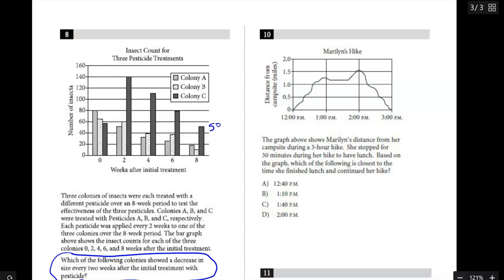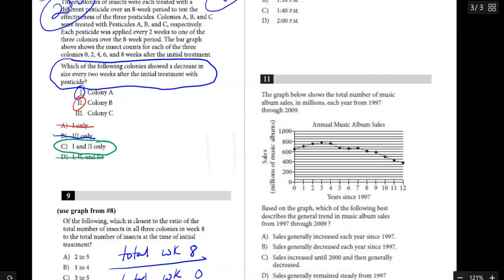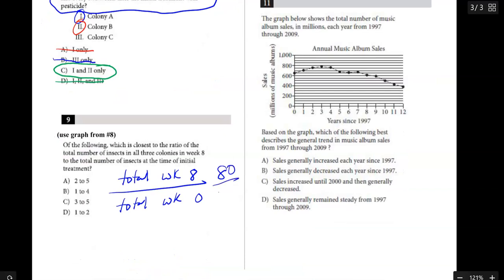So that would be 80 for week 8. Now if we go back to week 0, it looks like colony A would be 80, B would be a little over 60, maybe 62, C is pretty close to 60, maybe 58, probably could have just used 60 for both of those. So 80, 60, 60 is around 200. So 80 in week 8, 200 in week 0. So we have 80 over 200, which if I cross out a couple zeros there, that's 8 over 20, which is 4 over 10, which reduces all the way down to 2 over 5. So correct answer there is A.